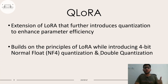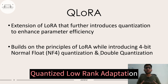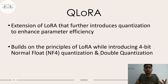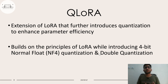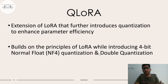Now we shall come to QLoRA. QLoRA is quantized LoRA approximation. When we talk of quantization, this basically means reducing, say, a 32-bit weight to a 16-bit or 8-bit weight. It's like when you store a double precision number — a double precision number occupies 32 bits or 4 bytes in memory. If you reduce it to a float type, it will occupy 16 bits or 2 bytes. QLoRA is an extension of LoRA that further introduces quantization. Two quantization techniques are introduced: one is 4-bit normal float quantization, and the other is double quantization.